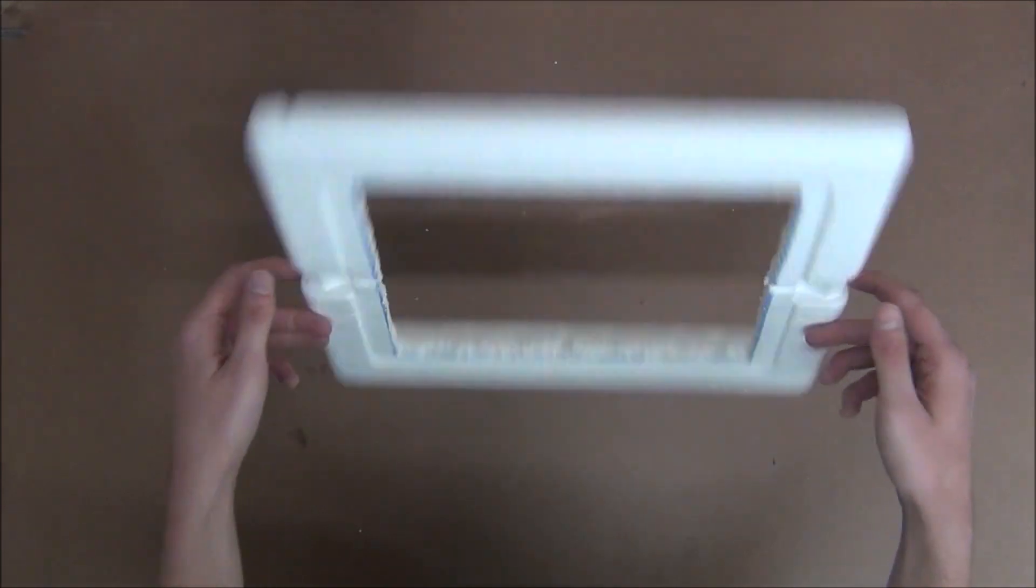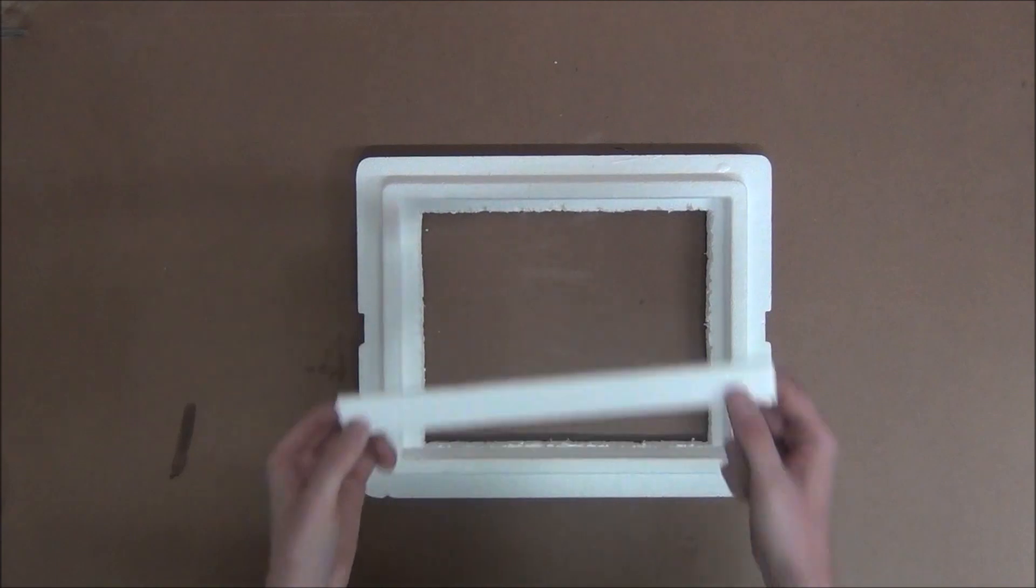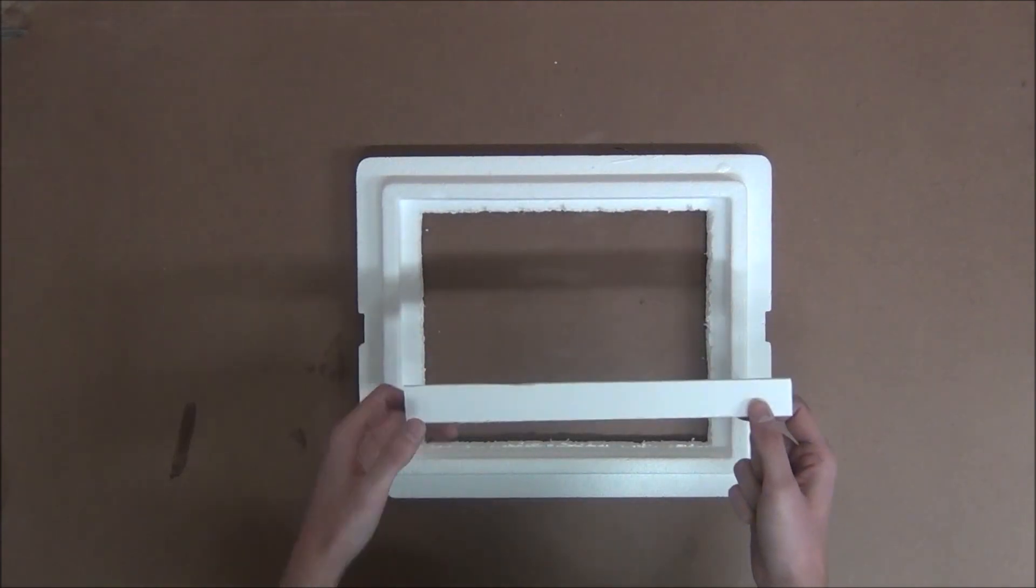So to continue, we'll flip the lid over and hot glue one inch wide foam board pieces to the inside of the frame. We'll want to glue them so that at least half an inch sticks out over the edge.